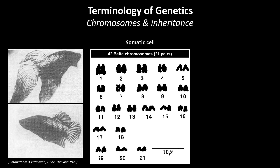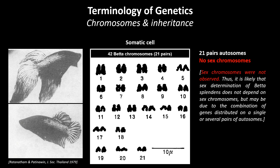Several scientific studies have indicated that show bettas have 42 chromosomes organized in 21 pairs. No sex chromosomes have been identified so far. Over the years there has been a lot of speculation about the possible effect of environmental factors on sex determination, but to date no hard conclusions could be drawn, as most scientific articles show a very limited experimental approach and power.